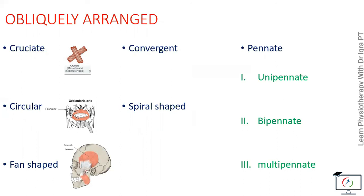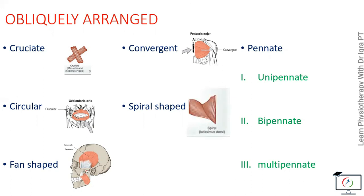In fan shape, the fascicles are converged in such a manner to give the shape of a fan, for example the temporalis muscle. In the convergent type, the fibers are converging to make a triangle, for example the pectoralis major muscle. In spiral muscles, the fascicles are arranged spirally, for example the latissimus dorsi.